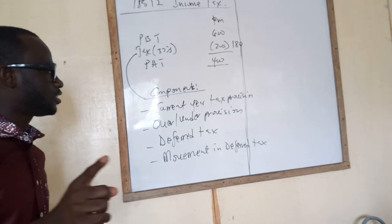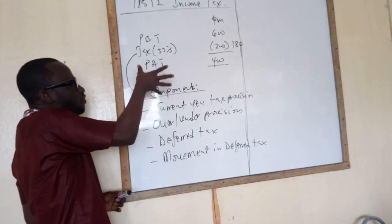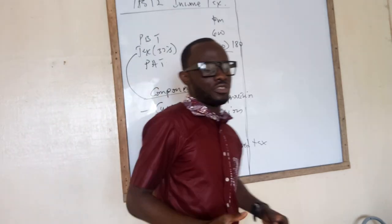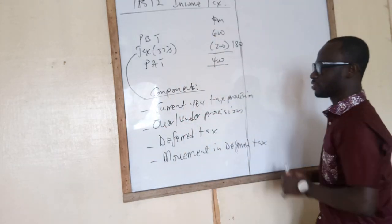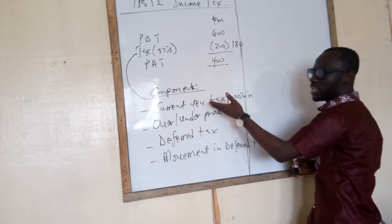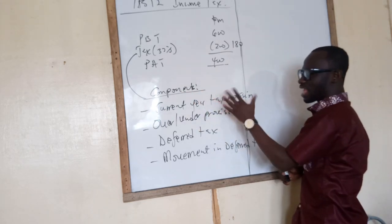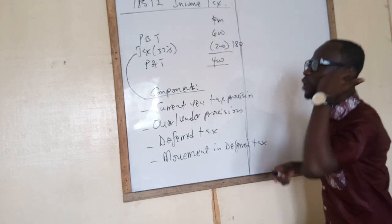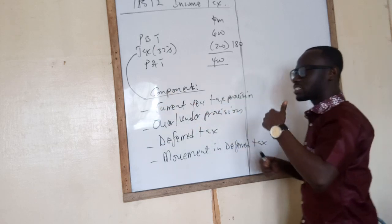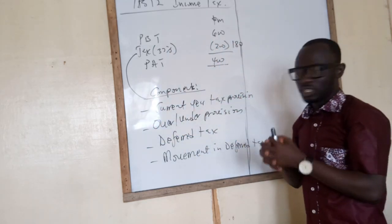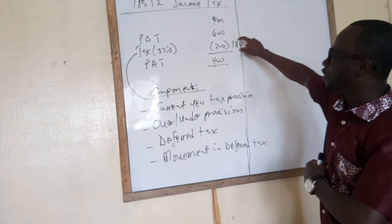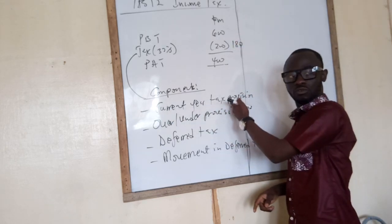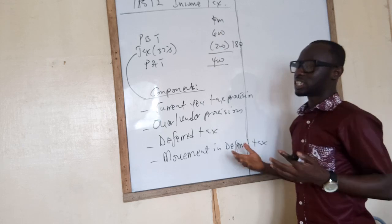These four things are the components of the tax figure that is put into the income statement. The first one is not magical because it is the current year tax provision, which means based on our accounting profit, we estimate that we will pay a tax of this for the current year. For instance, 30% of $600 gives $180, which becomes the current year tax provision, and that will be brought into the tax figure for the year.